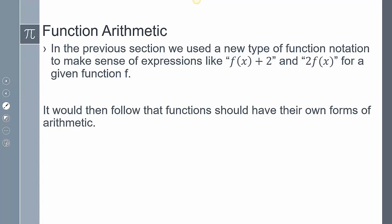In the previous section, we used a new type of function notation to make sense of expressions like f(x) + 2 and 2f(x) for a given function f. So it would follow that functions should have their own forms of arithmetic. Even though I was able to add 2 to my function or multiply my function by 2, how do 2 separate functions interrelate?